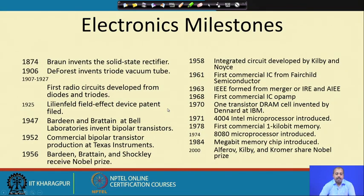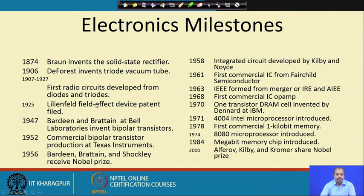These are the milestones in the electronics industry. In 1874, Brown invented the solid-state rectifier; in 1906, DeForest invented the triode vacuum tube. This whole development started with the solid-state rectifier, then vacuum tube diodes and triodes, then radio circuits, then field effect devices — the patent was filed in 1925. In 1947, as we already said, the bipolar transistor was invented.